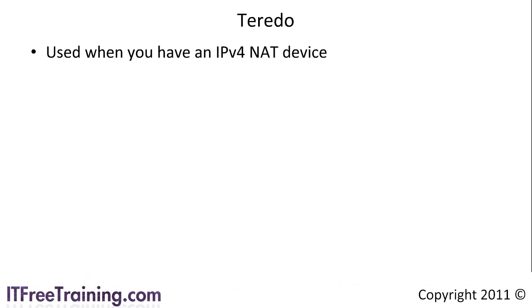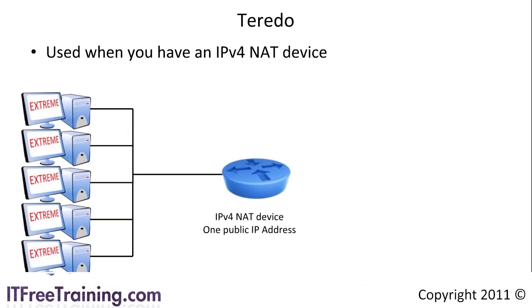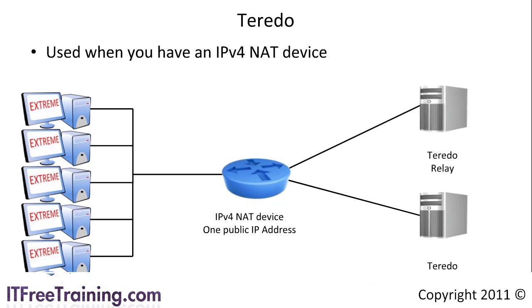The next transition technology is Teredo. This is available for Windows Server 2008, Windows Vista, Windows 7, and Windows XP. You can use Teredo when you have an IP version 4 NAT device that your clients connect to. If your company wants to start using IP version 6 but does not want to upgrade the IP version 4 NAT device, you may need to use Teredo. The clients on the network connect to the IP version 4 device to access the internet. The NAT device has one public IP version 4 address. In order to connect to an IP version 6 host, the clients contact a Teredo server. The Teredo server gives the client an IP address to the Teredo relay. The client creates a tunnel to the Teredo relay — all communication between the client and the Teredo relay is in IP version 4, which makes it compatible with the NAT device. The client can then use the tunnel to send its IP version 6 traffic to its destination.